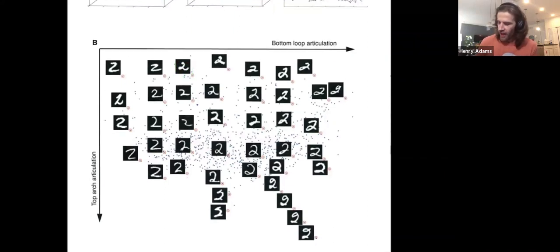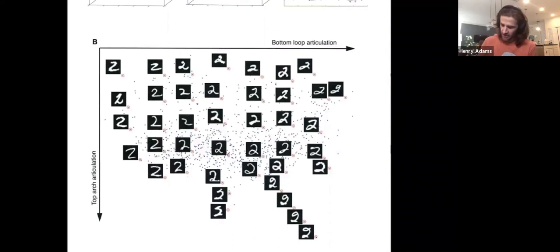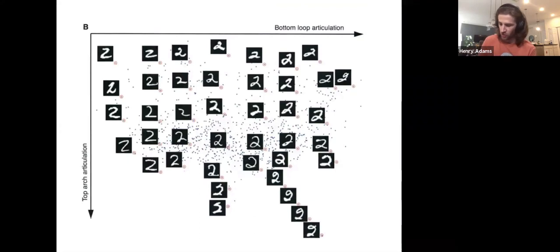Okay, so after the fact, you can try to interpret what is this map that I see. It's not the map of the US, even though it looks a little bit like it. It's this map of twos. How you might try to interpret this map is that going from left to right, we look at how articulated is the bottom portion of the two. So the bottom portion of these twos are quite flat, and then they get a little bit more loopy. And then over here, the bottom portion of these twos is quite loopy, I would say. So that's the right and the left axis.